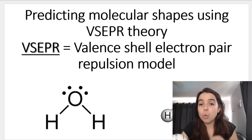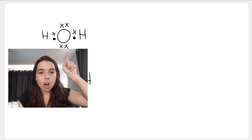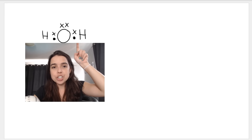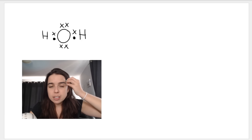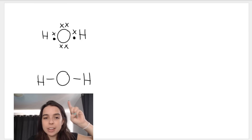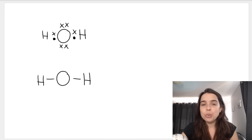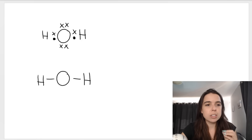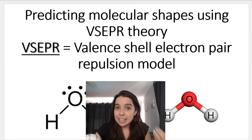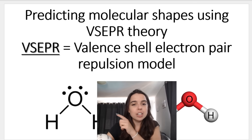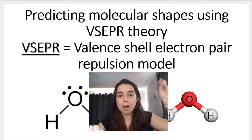I want to start off by showing you water. When we draw the Lewis dot diagram for water, oxygen has six valence electrons represented by the crosses, and hydrogen each has one represented by the dots. In your mind, if you don't know what water looks like in reality, you might think it looks like a flat linear molecule in one plane. However, water is often depicted to look like this — called a bent shape, or angular shape. The reason it looks bent and not straight or linear is because of the valence shell electron pair repulsion model.